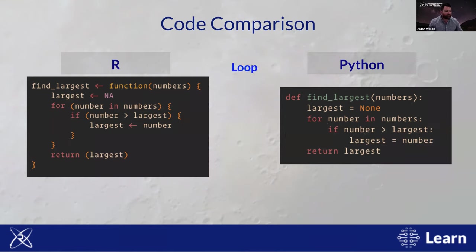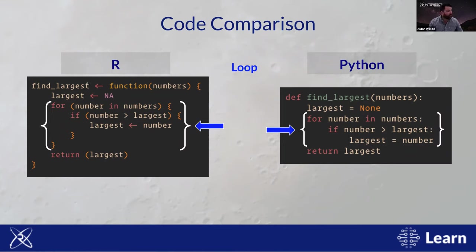Loops in both languages are again very similar to conditionals. R has parentheses around the first line of the loop that determines the input parameters, where Python does not. Python uses a colon and indentation to define the code block that runs as part of the loop, while R uses curly braces — an opening brace on the first line and a closing one at the end.